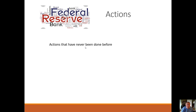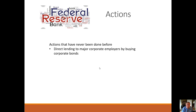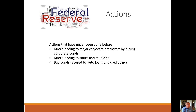The Fed is also engaging in things they've never done before, which is rather significant. They are doing direct lending to major corporate employers by buying corporate bonds — in the past, they were all government or government-guaranteed securities, so they've taken on a little more risk. Direct lending to states and municipalities. Buying bonds secured by auto loans and credit cards to keep that market going. If a bank wants to issue auto loans to consumers, they need the funds to do that — they can package up a pile of auto loans and sell them to the Federal Reserve, who keeps them on their balance sheet, providing more cash for that lender to make more auto loans.